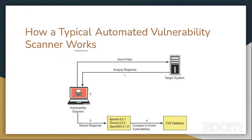Once it has enough information, the scanner will determine what software and version number are running on those specific open ports and record that information. The scanner would then try to determine if the software listening on a specific port is susceptible to known vulnerabilities, by correlating a database of known vulnerabilities against recorded information and producing the result. Basically, a general explanation of how things like Nmap work.